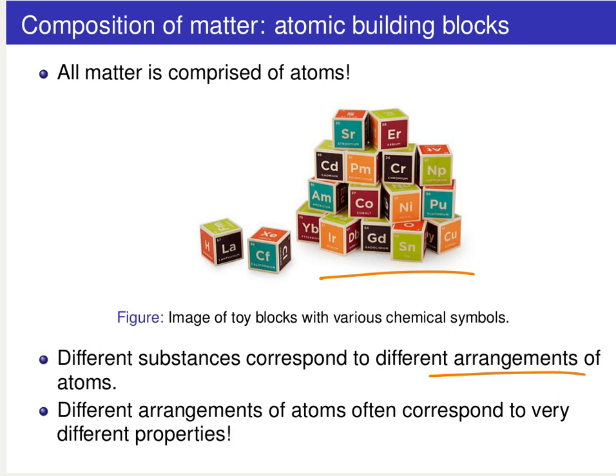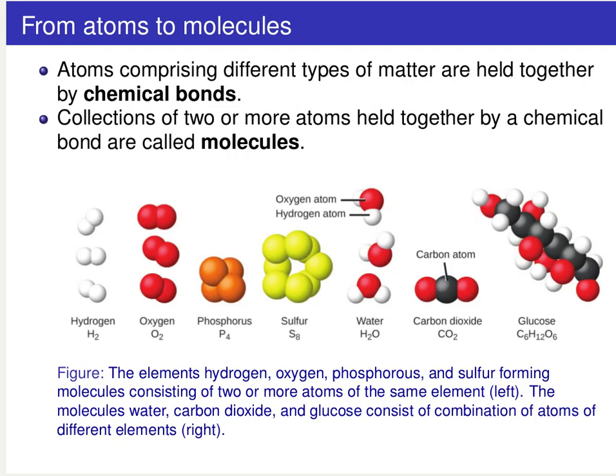We can use these different building blocks and different relative proportions to make a vast array of different types of compounds. And one of the really fascinating aspects of chemistry is that by shuffling these different building blocks around, we can get matter with a surprisingly vast array of different properties. When you put these different building blocks together, you form what are called molecules. Molecules are made up of individual building block atoms coming together and they come together and are held together using what are called chemical bonds, which we'll talk about in more detail later on in the course.